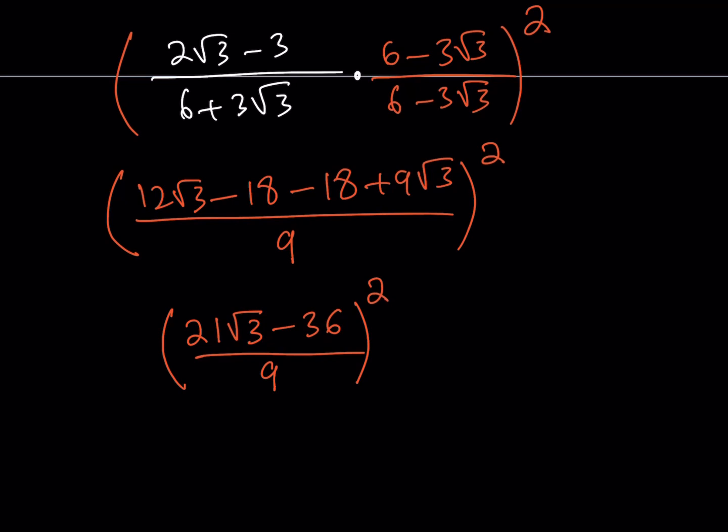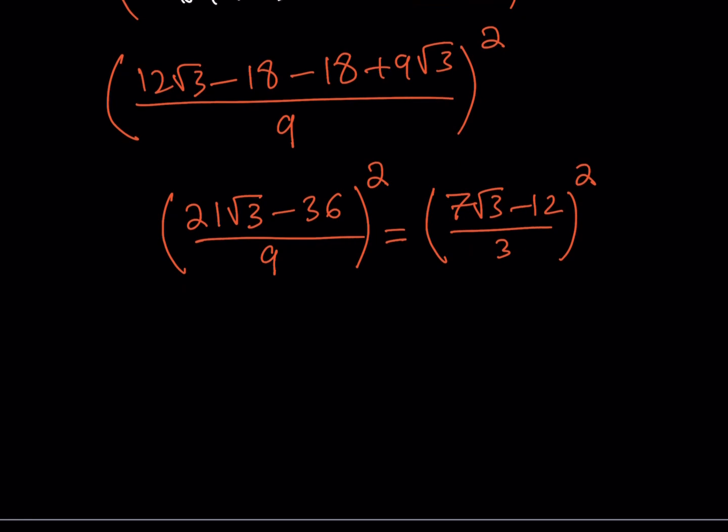12 plus 9 is going to be 21 root 3 minus 36 divided by 9 squared. Now, what we need to do is we can actually simplify this because everything is divisible by 3. So that'll be 7 root 3 minus 12 divided by 3. And then we'll square that expression. And then when we square the expression, it's going to look like the following.